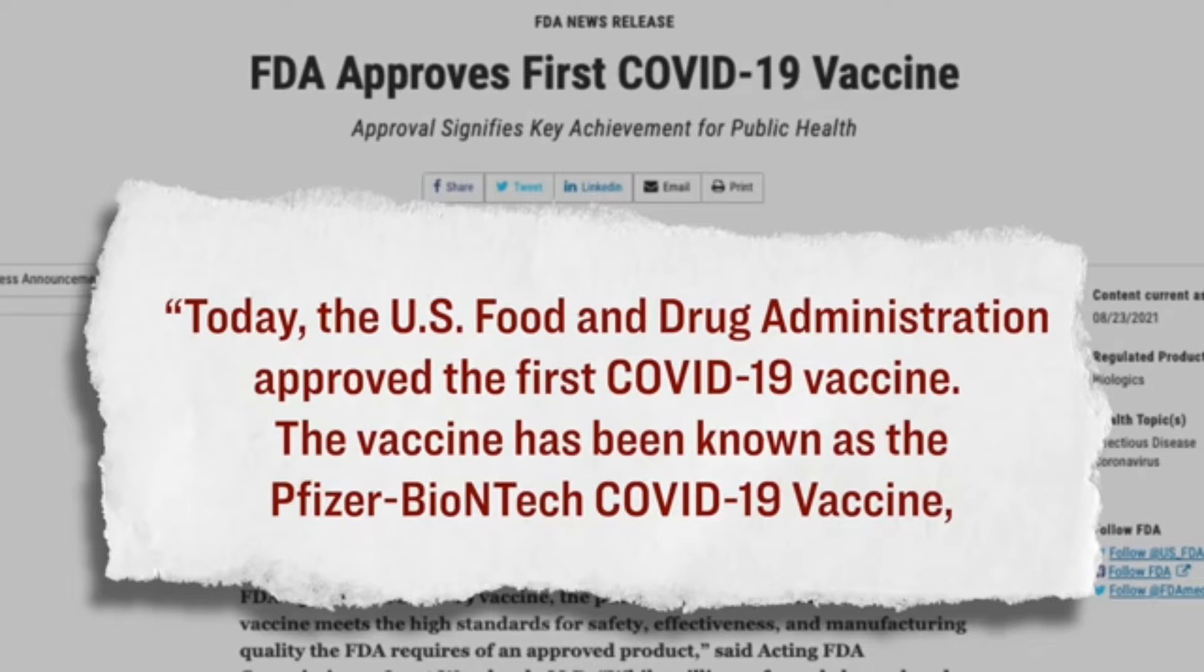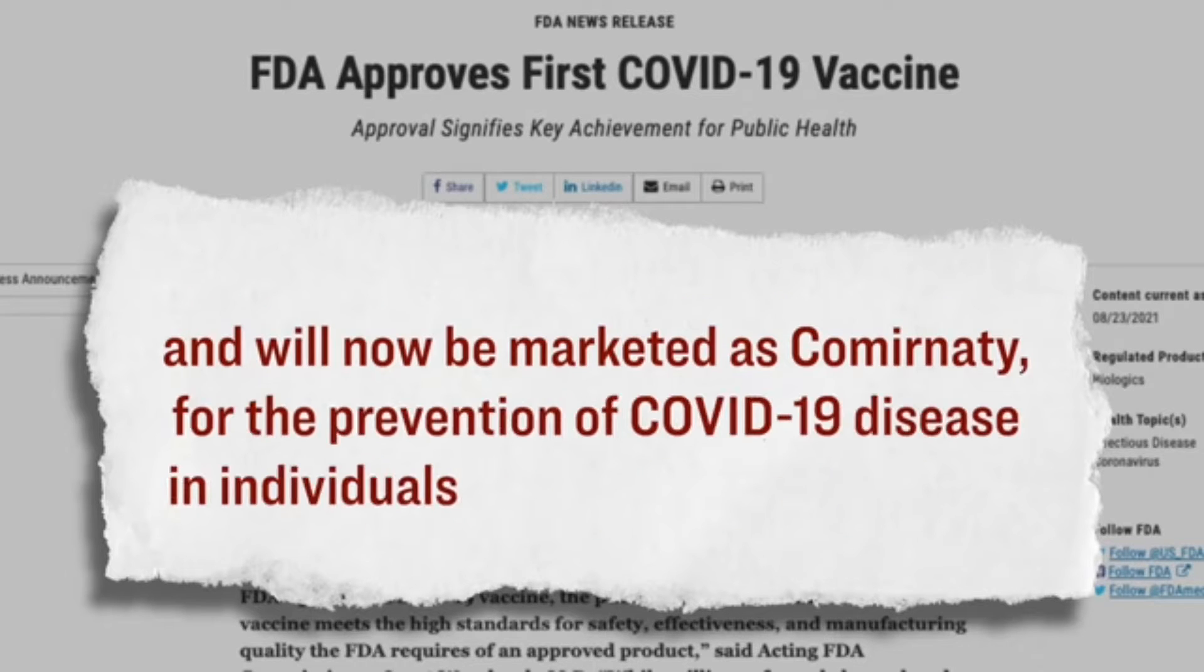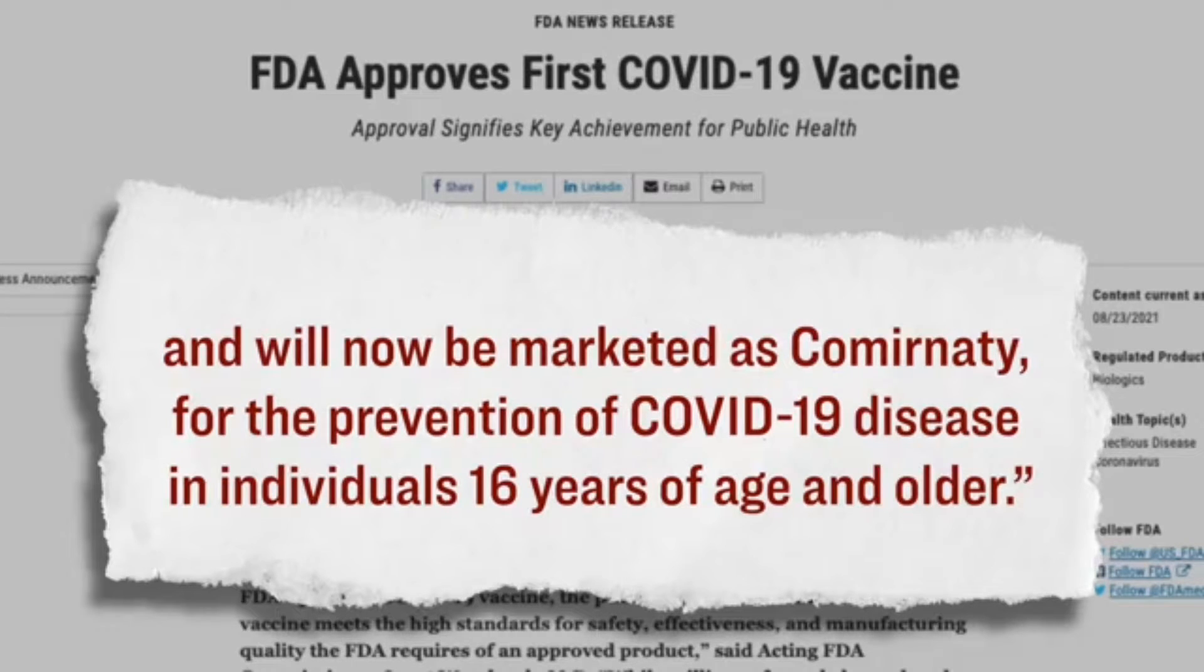The vaccine has been known as the Pfizer biotech COVID-19 vaccine and will now be marketed as Comirnaty for the prevention of COVID-19 disease in individuals 16 years of age and older. Now, what the statement is saying is that this vaccine is now fully approved for individuals who are 16 years of age or older.